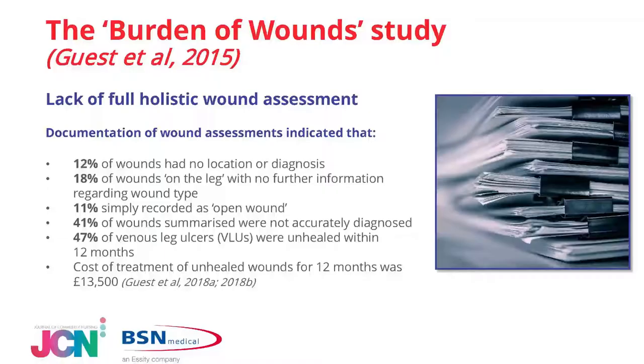The data also suggests a lack of holistic assessment pertaining to undiagnosed etiology of wounds. For example, Doppler assessments: 85% of patients had an unspecified leg ulcer, and only 46% of those were in compression therapy. All of those 85% of patients had not had an ABPI or Doppler undertaken, which is the gold standard pertaining to compression therapy. 95% of patients with diabetic foot ulceration did not receive a Doppler assessment — and we know these patients are at significant risk of peripheral vascular disease and potential amputation. In addition, it was down to lack of etiology and diagnosis of that wound.